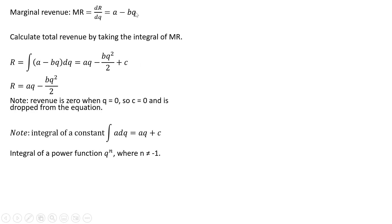And then I use the integral of a power function rule, q raised to the power of n. In our problem here, q is raised to the power of 1. So following the rule, it's going to be the exponent on q plus 1, and that's going to be all divided by the exponent on q plus 1. That's where the q squared is coming from — 1 plus 1 — and the 2 in the denominator is coming from n equals 1 plus 1.